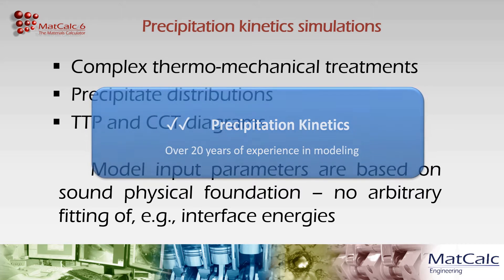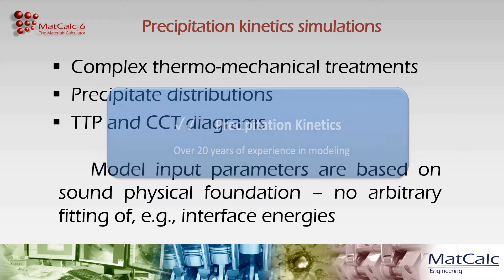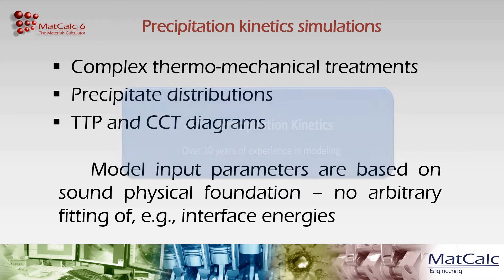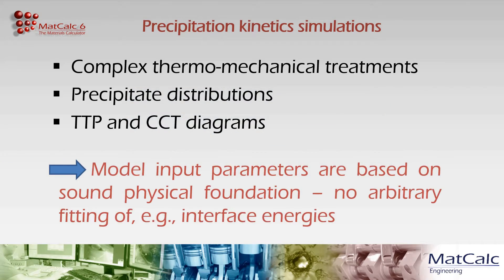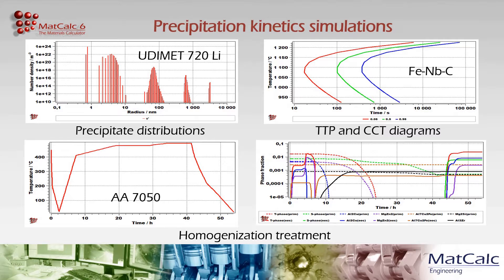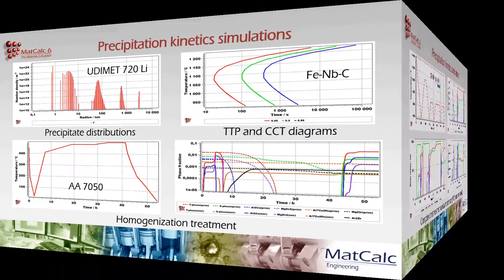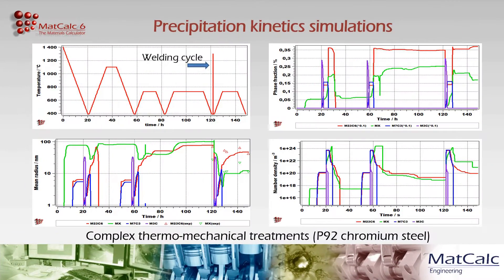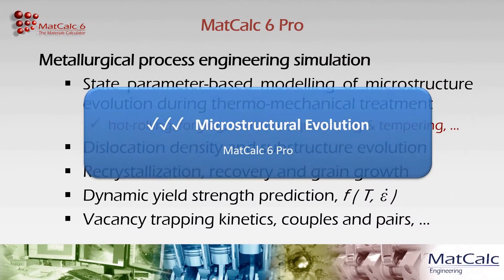MATCALC is a pioneer in the development of models for precipitation kinetics that have a strong physical basis and minimize the need for fitting parameters. Use MATCALC to simulate how the composition and size distribution of both stable and metastable precipitates evolve during complex thermochemical treatments, or calculate isothermal or continuous time-temperature precipitation diagrams for your alloy system.